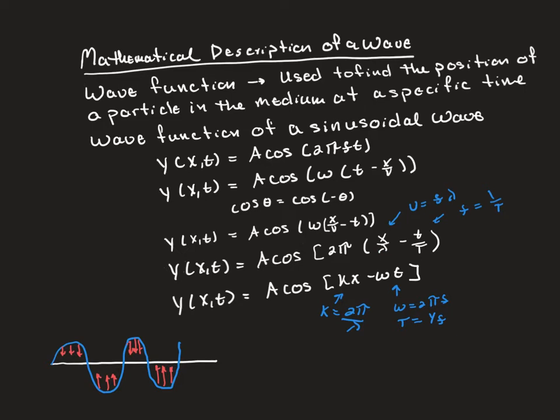We have 2π, so we distribute the frequency to the second term as well, which means frequency equals 1 over the period — which is how we end up with the period in the denominator.